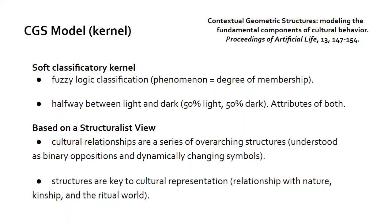The representation-rich part of the model uses these CGS models, or contextual geometric structures. I presented that at ALIFE about eight years ago. It includes a soft classificatory kernel which uses fuzzy logic to classify things. We're dealing not with probabilities but with degrees of membership in a membership function. We can have things like, if a stimulus is halfway between light and dark, we can define absolute light, absolute dark, and then find a membership function within that continuum. The agent might sample something that's 50% light and 50% dark and can have attributes of both in that way. This is based on a structuralist view of culture.